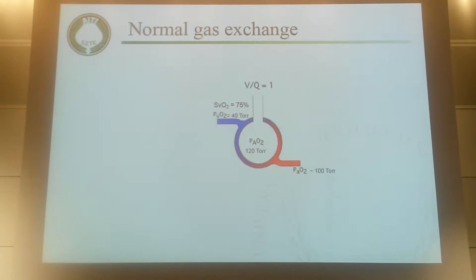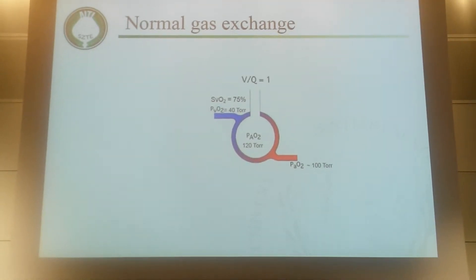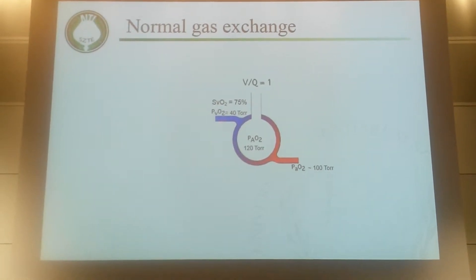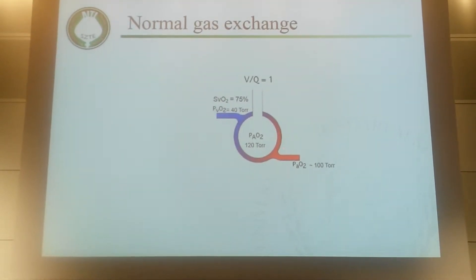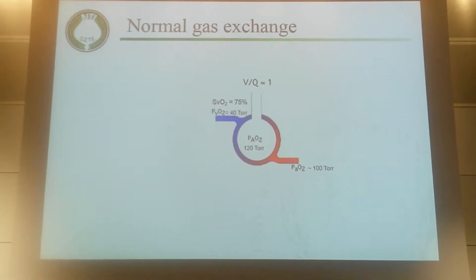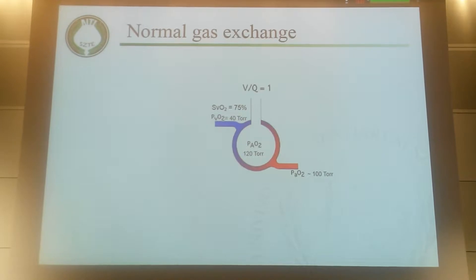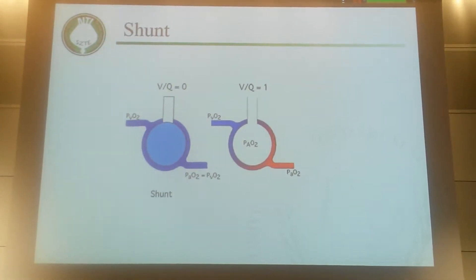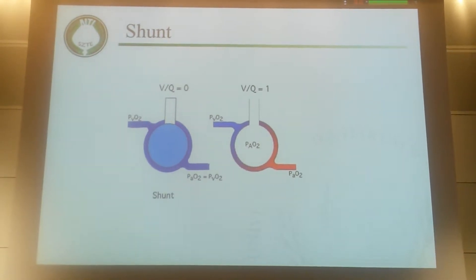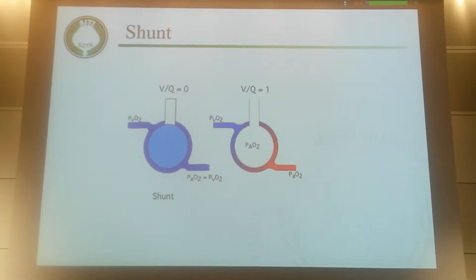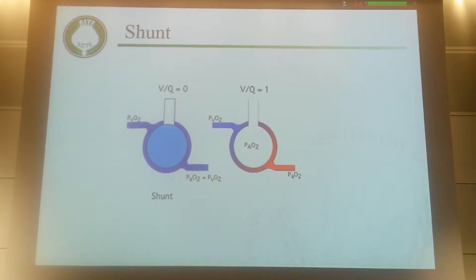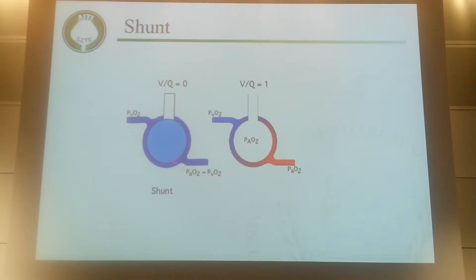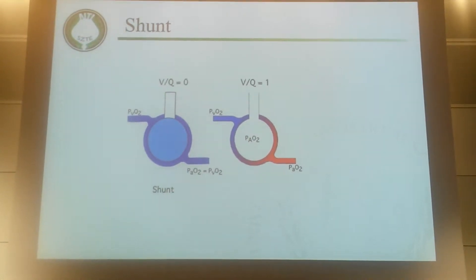Normally, oxygenation takes place in an alveolus like this one, and your alveoli in this room are most likely to be open. Whenever blood reaches it from the right ventricle, it becomes oxygenated in a fraction of a second, and the well-oxygenated blood leaves the alveolus. However, in our patients there are alveoli which do not contain air, either because of atelectasis or they are filled with something — secretions or whatever. In this case, blood comes from the right ventricle but doesn't get in contact with oxygen, so it leaves unchanged. We call this shunt.